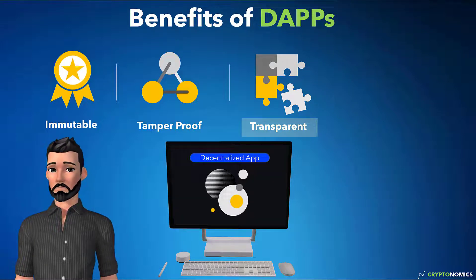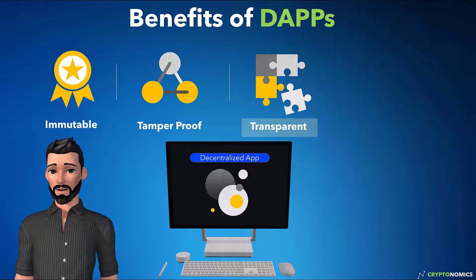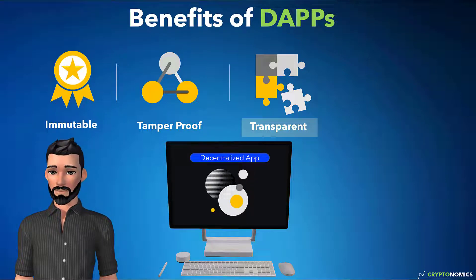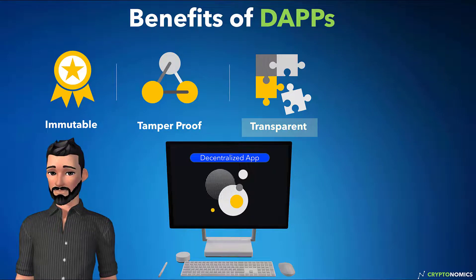For example, when we use online banking systems, we must trust that financial institutions will not misuse our financial data, tamper with records, or get hacked.